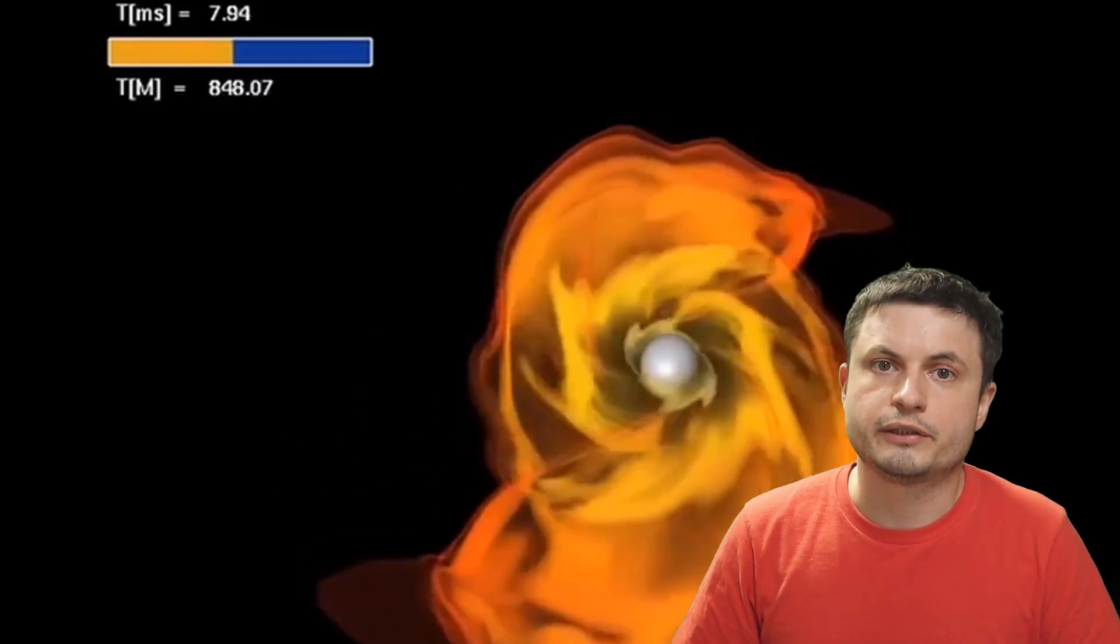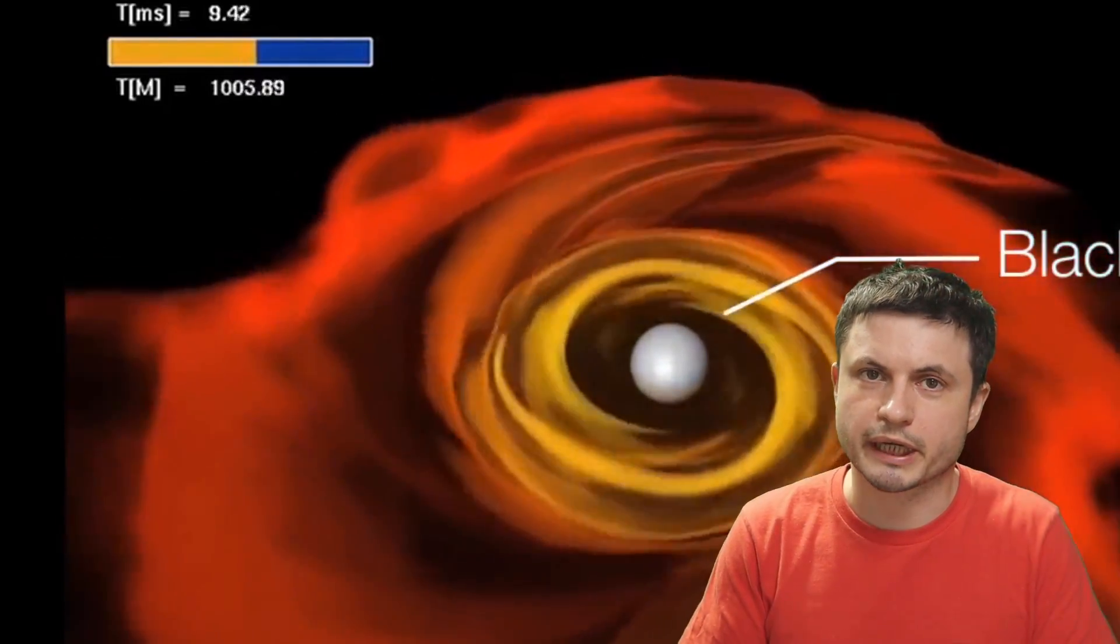And all of the models so far suggest that when these two neutron stars collide, their total mass will generate some sort of a relatively small black hole.